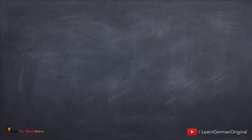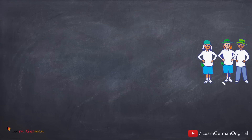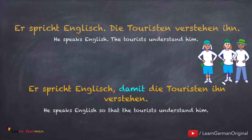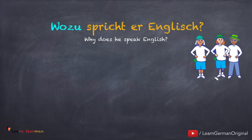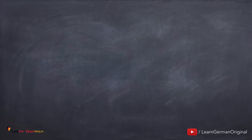Als erstes schauen wir uns an, wie man Nebensätze oder Finalsätze mit damit formuliert. Hier ist das erste Beispiel. Er spricht Englisch. Die Touristen verstehen ihn. Wir bringen die zwei Sätze zusammen: Er spricht Englisch, damit die Touristen ihn verstehen. Er will natürlich mit seinem Englisch ein Ziel erreichen. Wozu spricht er Englisch? Er spricht Englisch, damit die Touristen ihn verstehen.